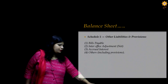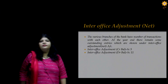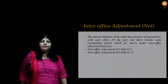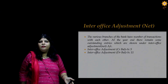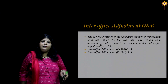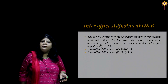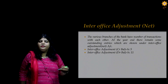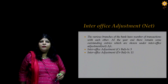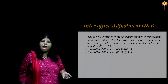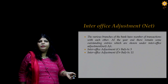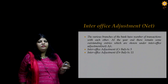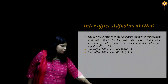We will now look at inter-office adjustment net in detail. A bank will have a number of branches and there will be transactions between these branches. But when we close our accounts at the end of the year, there will be some transactions which are still unadjusted, and the difference, if any, is transferred to the inter-office adjustment account. The resulting difference can be a debit balance or a credit balance. If it is a debit balance, it is posted on the asset side; if it is a credit balance, it is posted on the liability side.